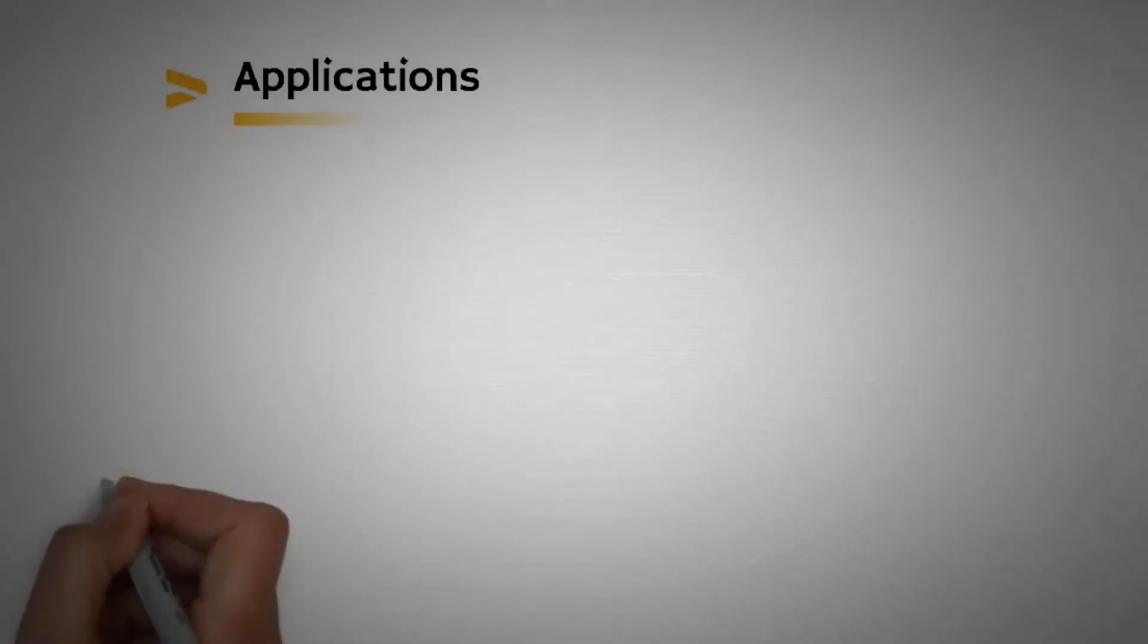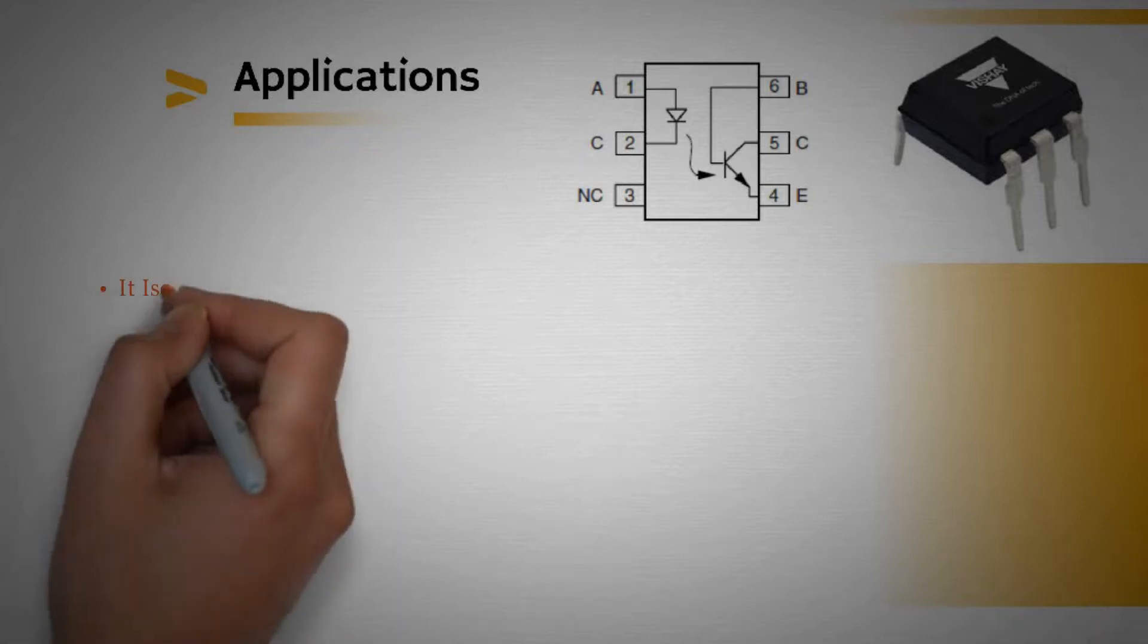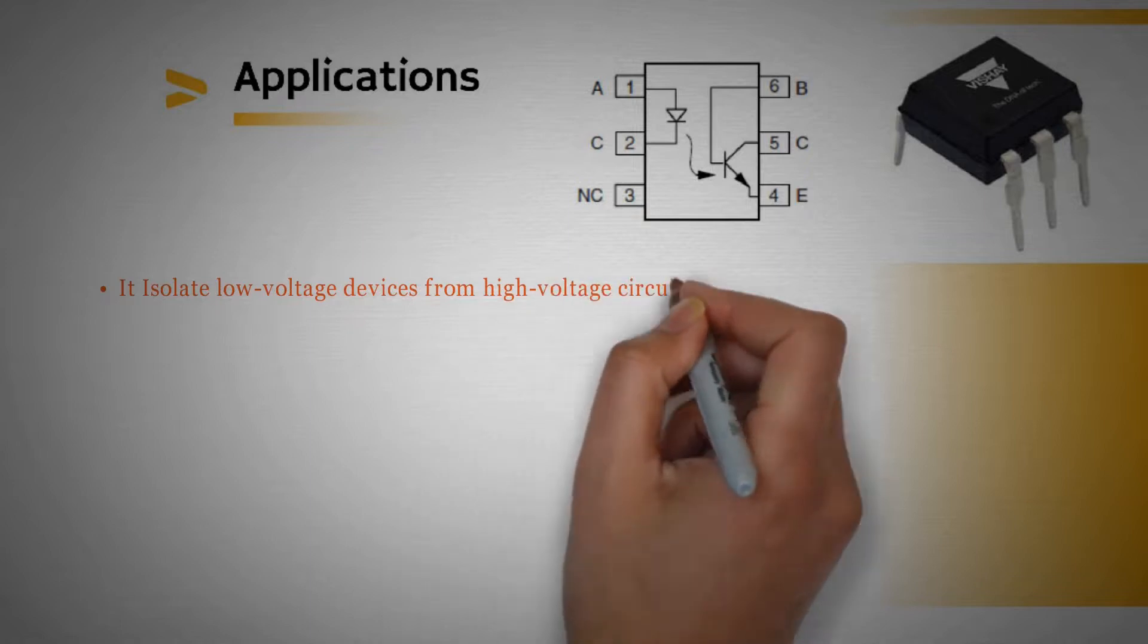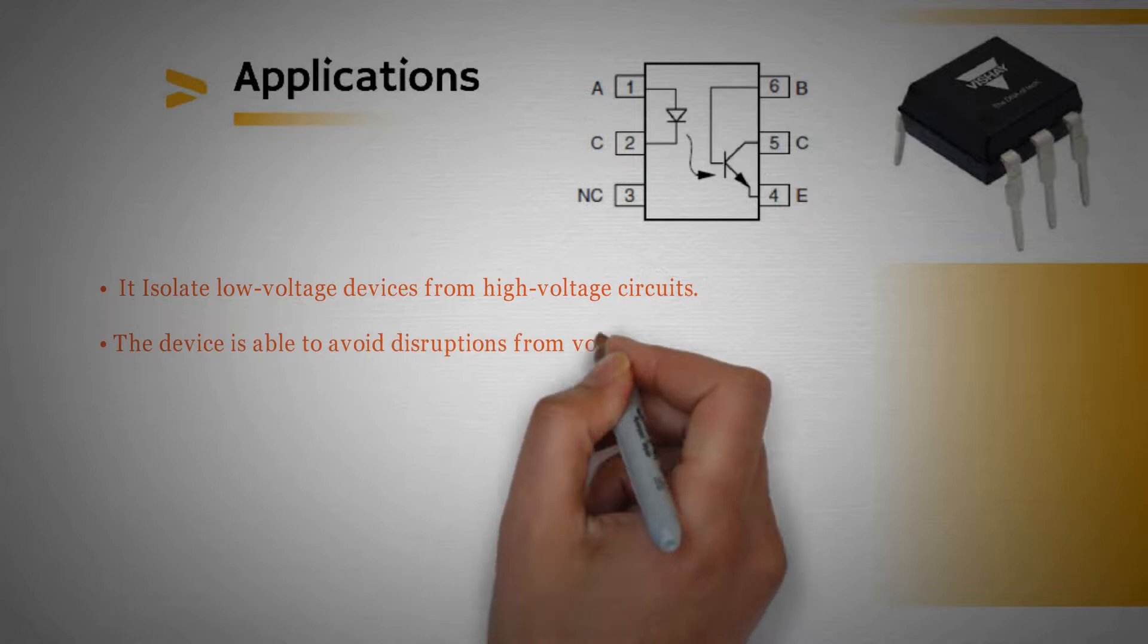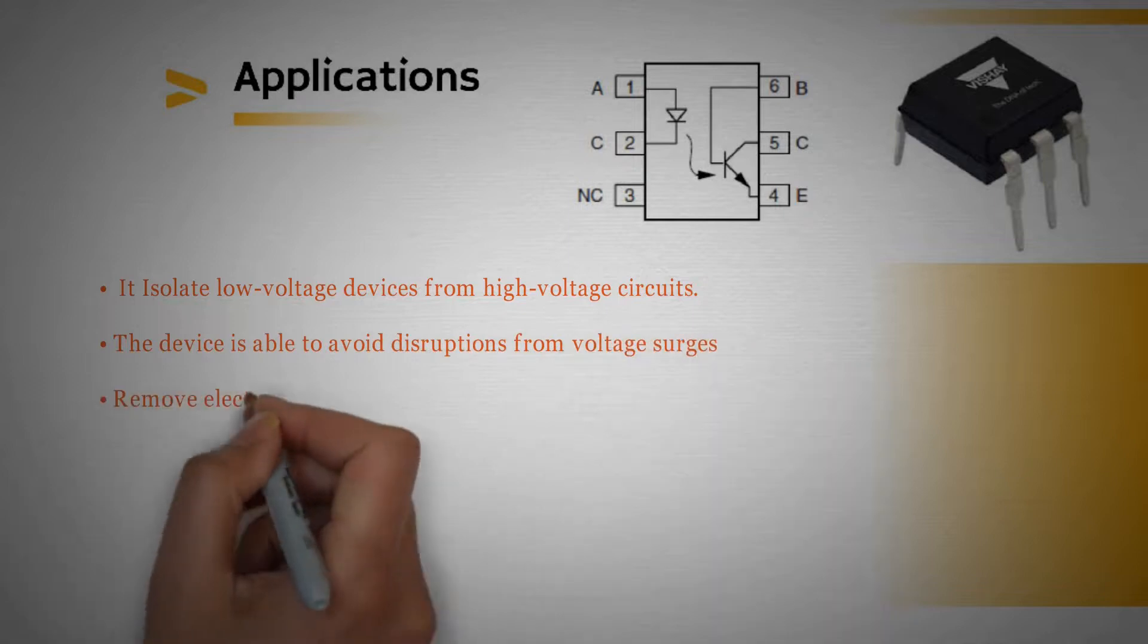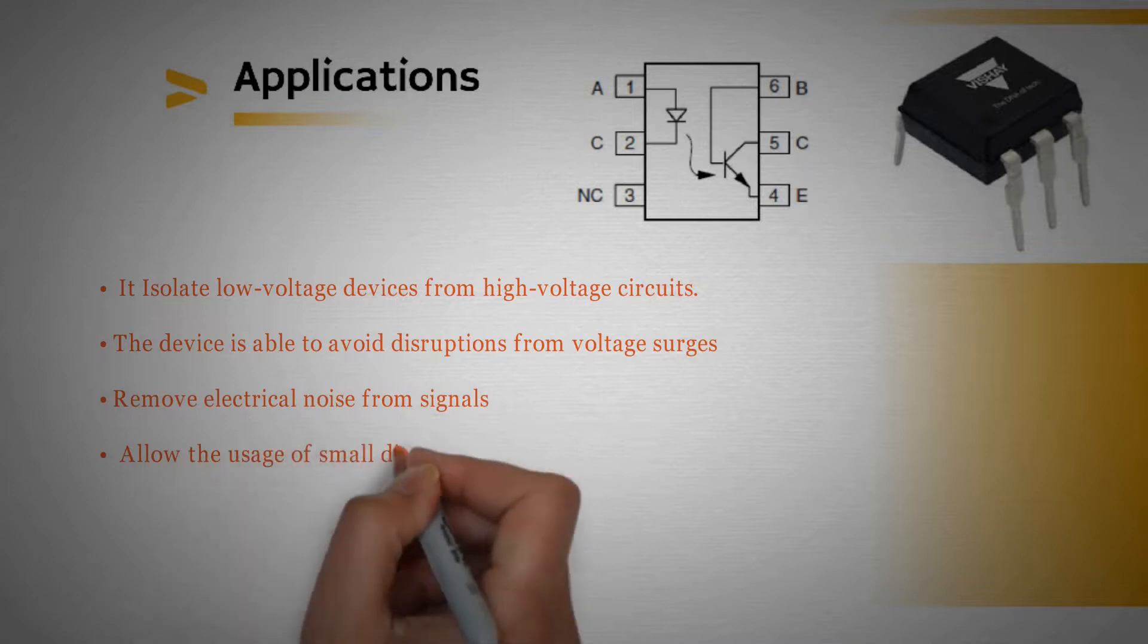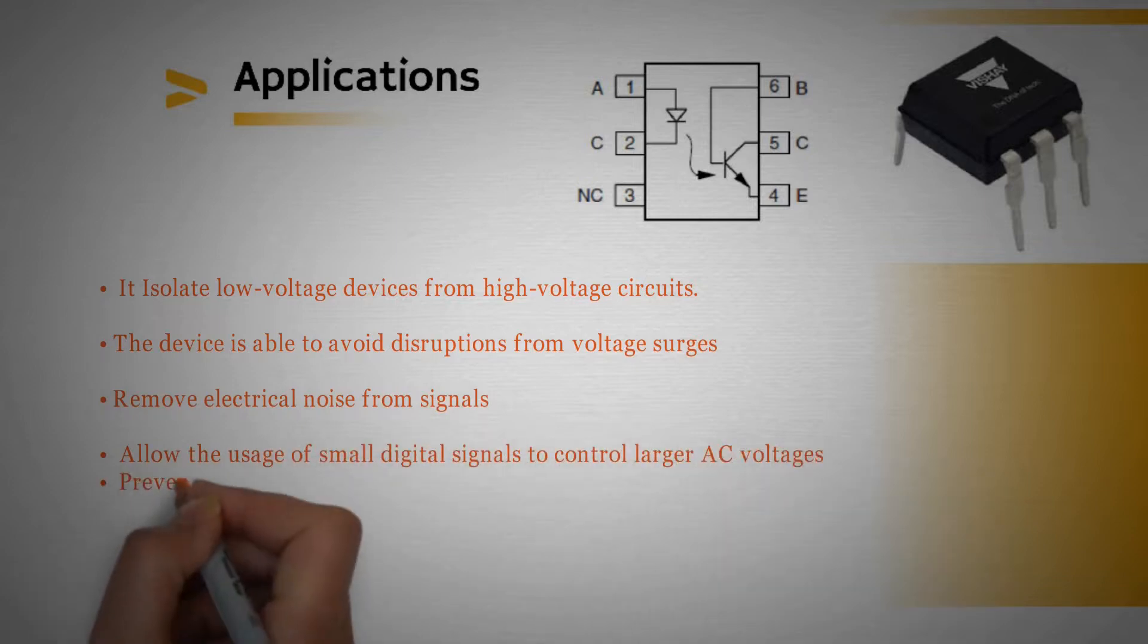Some of the applications of the opto-isolators can be: it isolates low voltage devices from high voltage circuits. The device is able to avoid disruptions from voltage surges, remove electrical noise from signals, allow the usage of small digital signals to control larger AC voltages, and prevent ground loops.